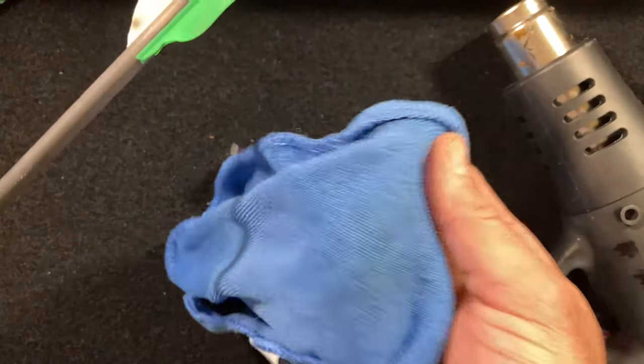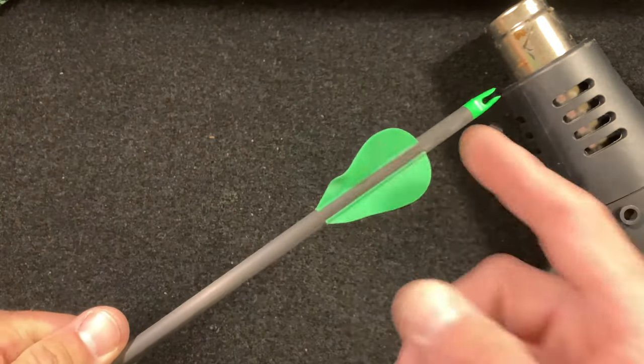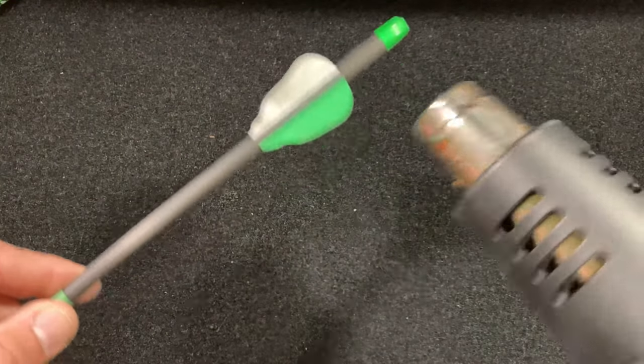Then all you want to do is get a cloth with some 70% alcohol and wipe whatever dirt may still be on them. I'm going to do it right now so you can watch how it's done and see that it's really simple.